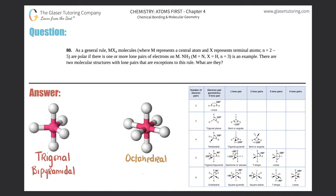Number 80: as a general rule, MXn molecules — where M is the central atom, X represents terminal atoms, and n equals 2 through 5 — are polar if there is one or more lone pairs of electrons on M. For example, NH3, which has M = N, X = H, and n = 3, is one example. There are two molecular structures with lone pairs that are exceptions to this rule.